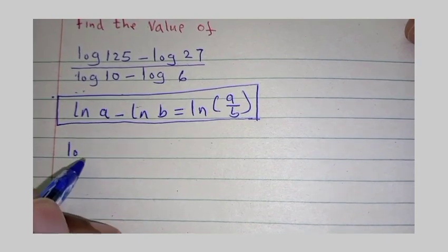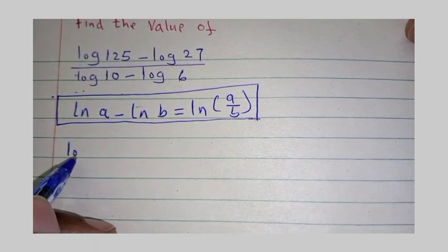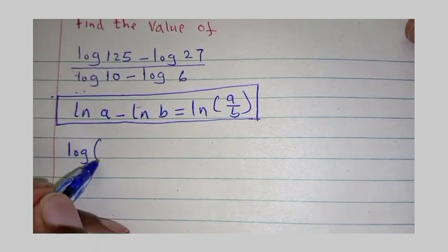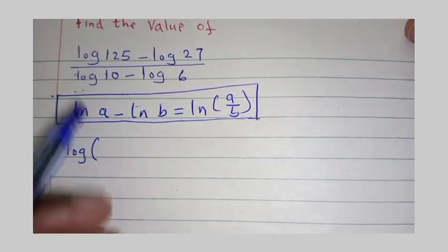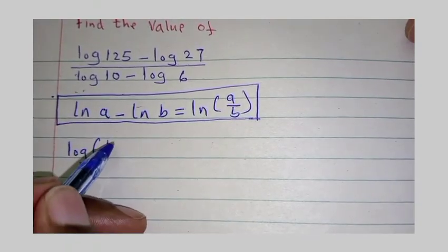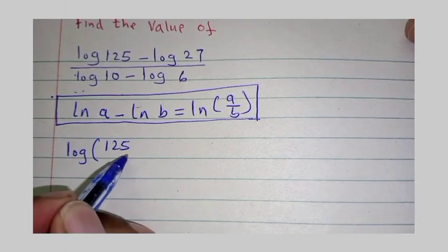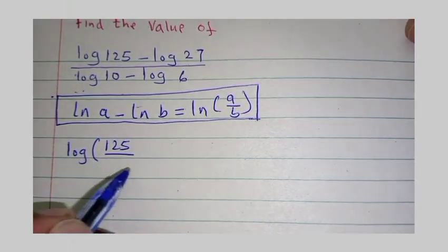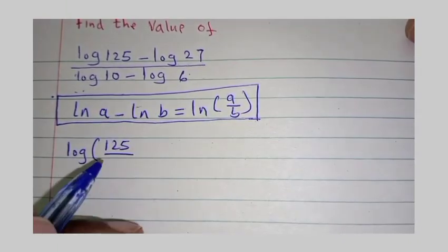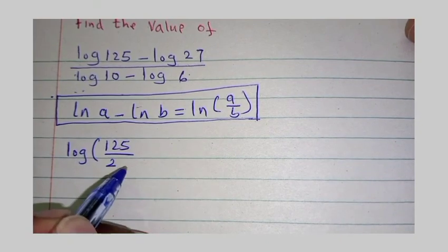So, we are going to factor a log of, our a is 125 divided by our b is 27.